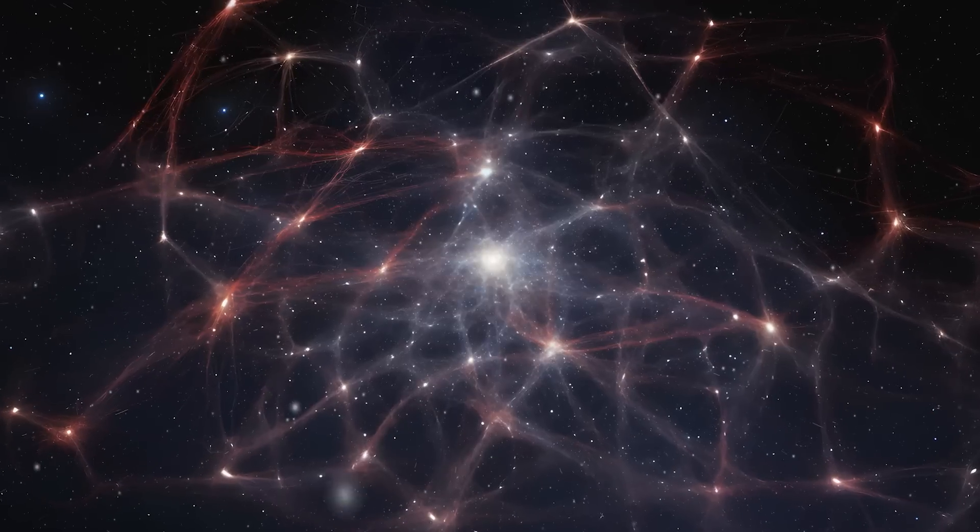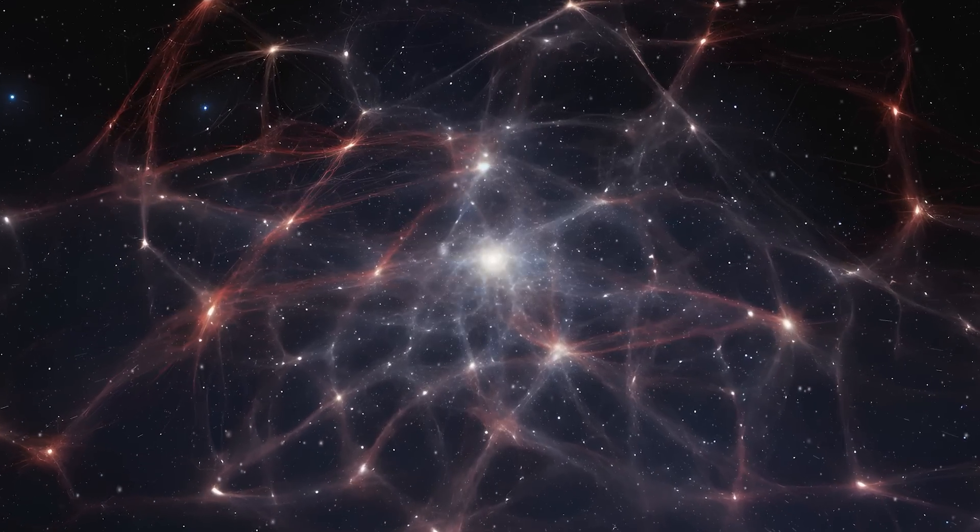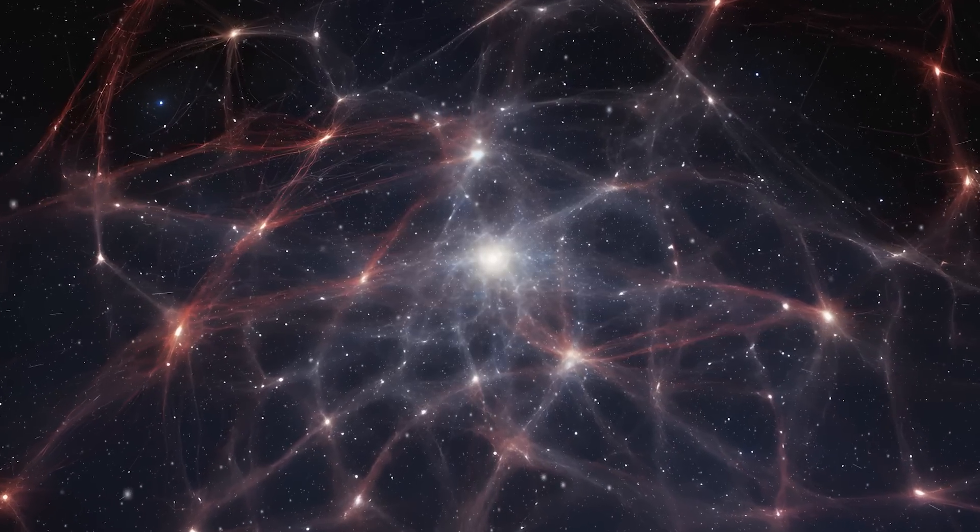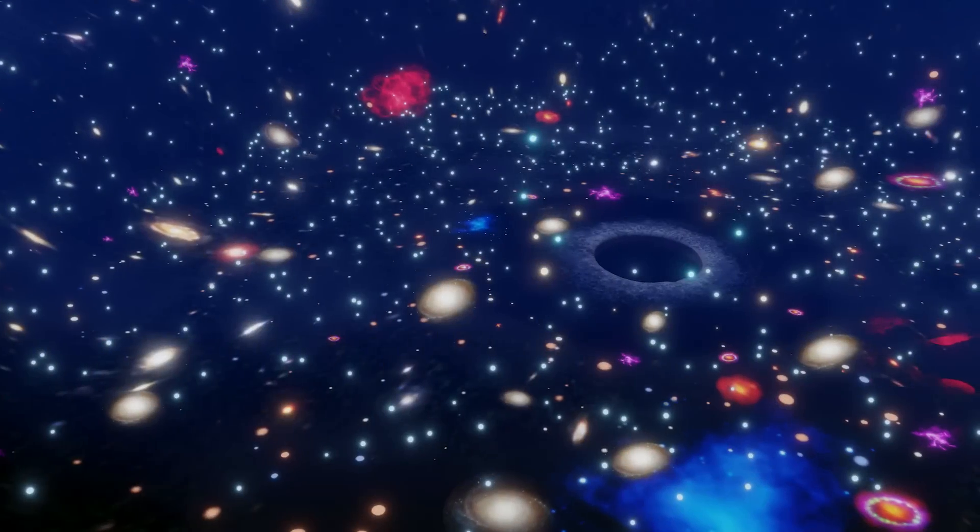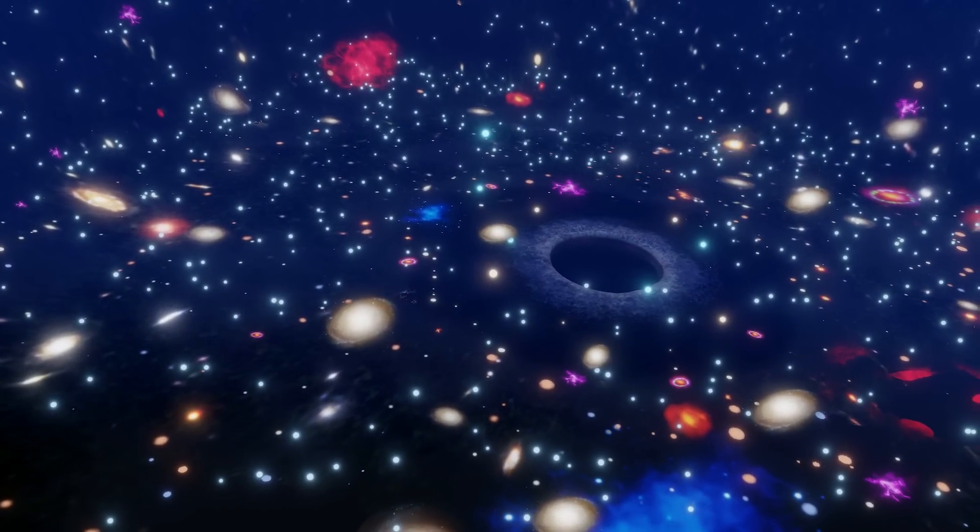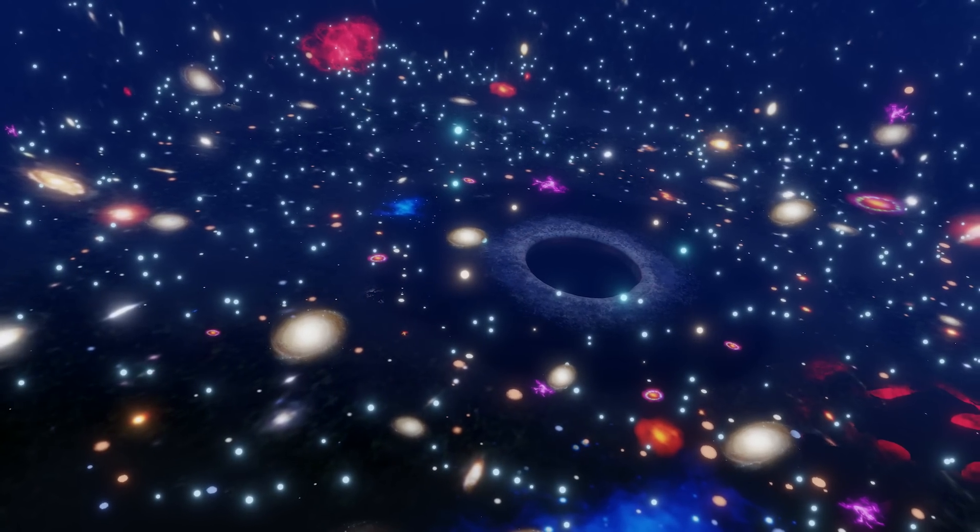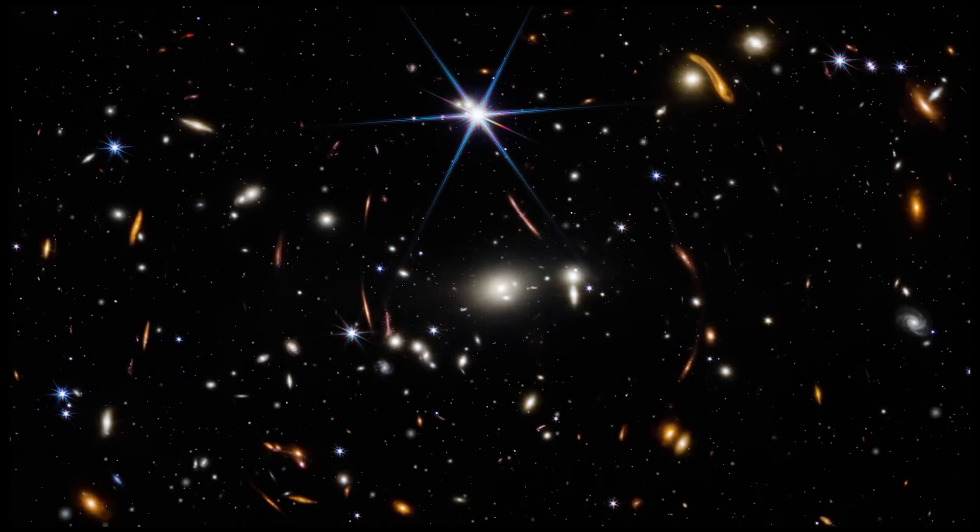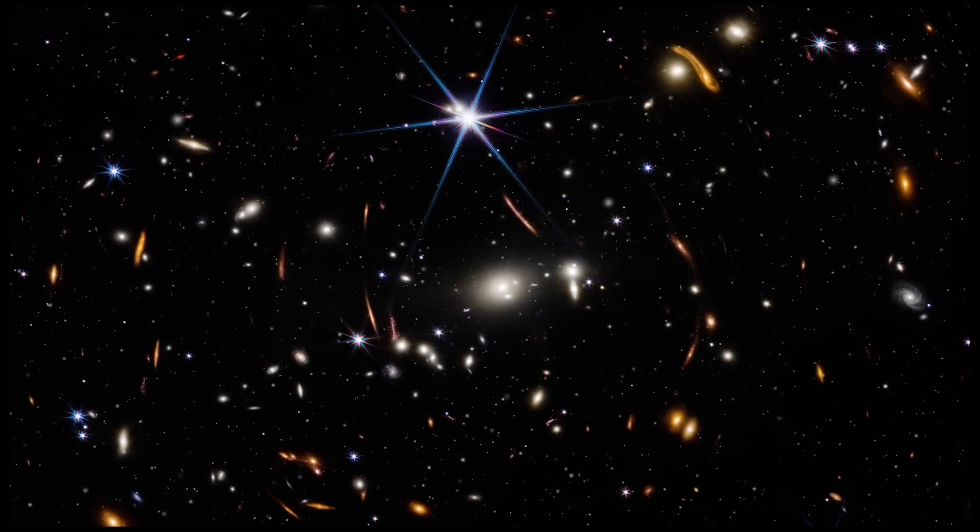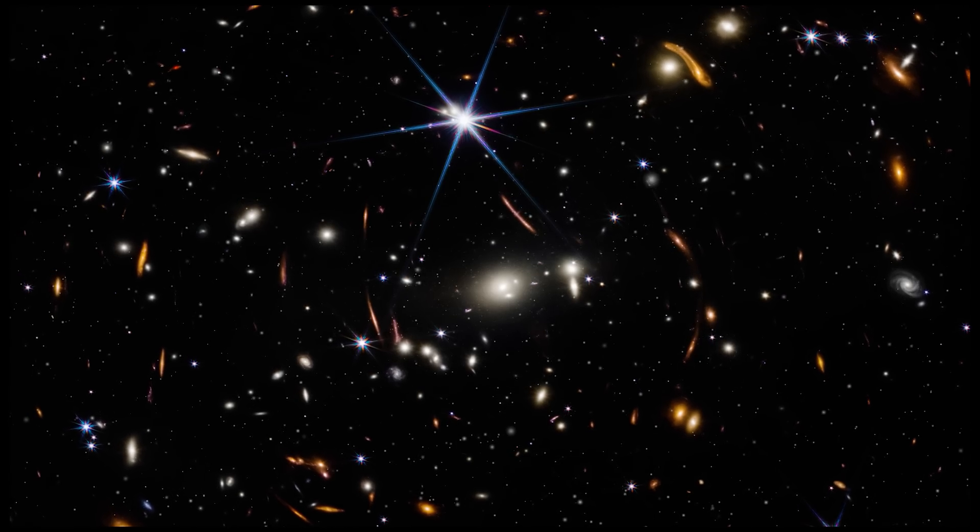Next, we have sheets, those expansive, flat structures that house numerous clusters, forming a broader network of galaxies. Think of them as the canvases of the cosmic web, where galaxies are arranged in sheets, connected by the threads of filaments. These sheets are like the pages of a grand storybook, each filled with tales of cosmic evolution and interactions.